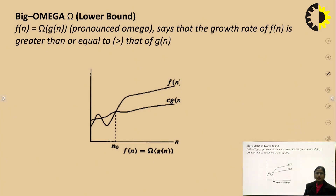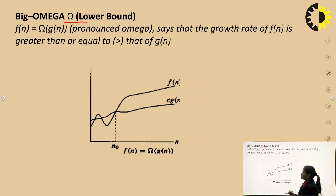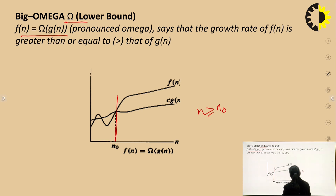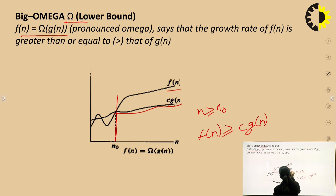Big Omega means the lower bound. For calculating the upper bound we use Big O, and for the lower bound we use the Omega notation. f(n) = Ω(g(n)) says that the growth rate of f(n) is greater than or equal to g(n). After n ≥ n₀, the value of f(n) is greater than or equal to c·g(n). This is called Big Omega — it determines the lower bound.